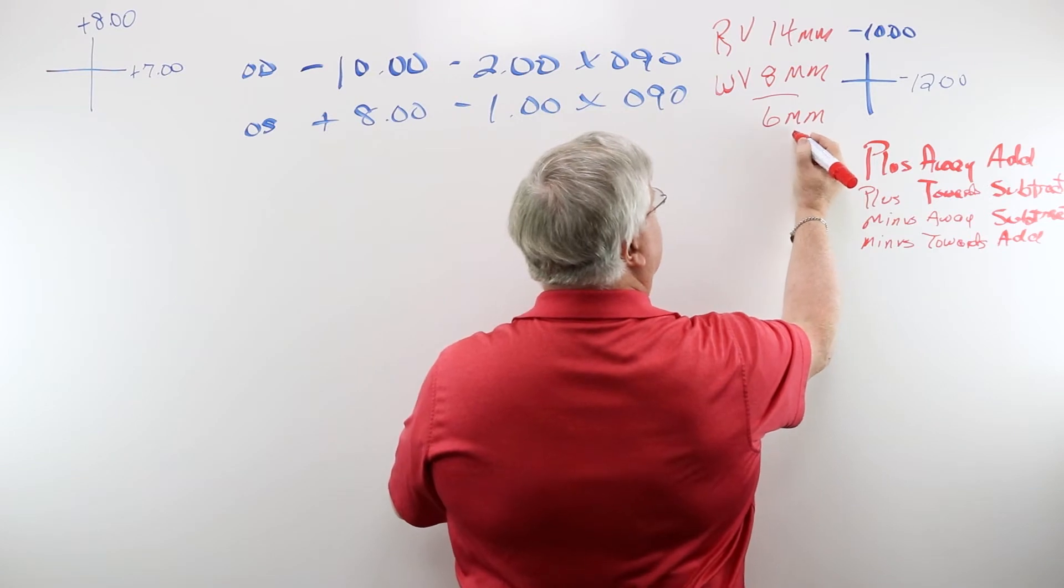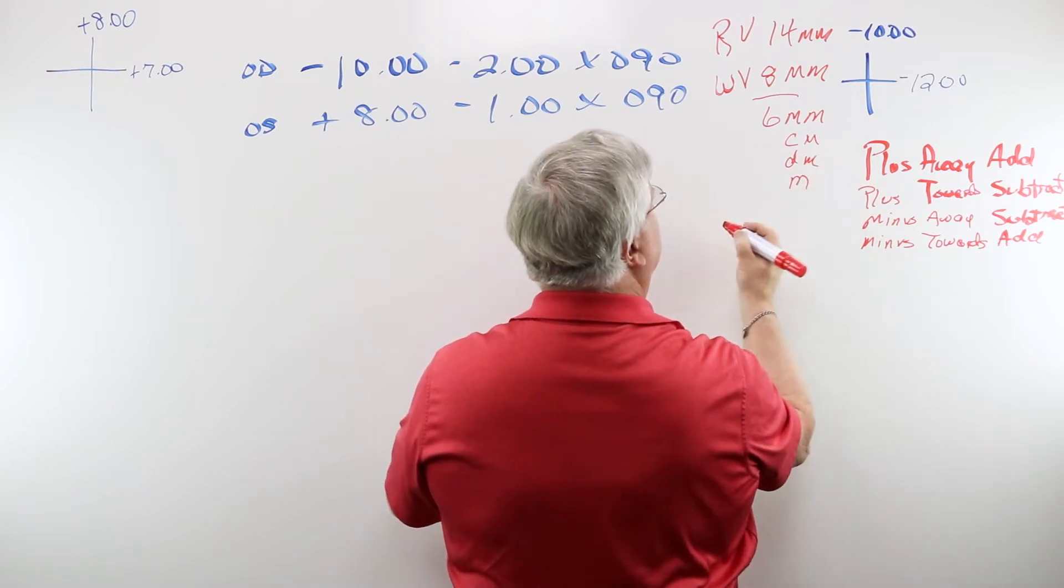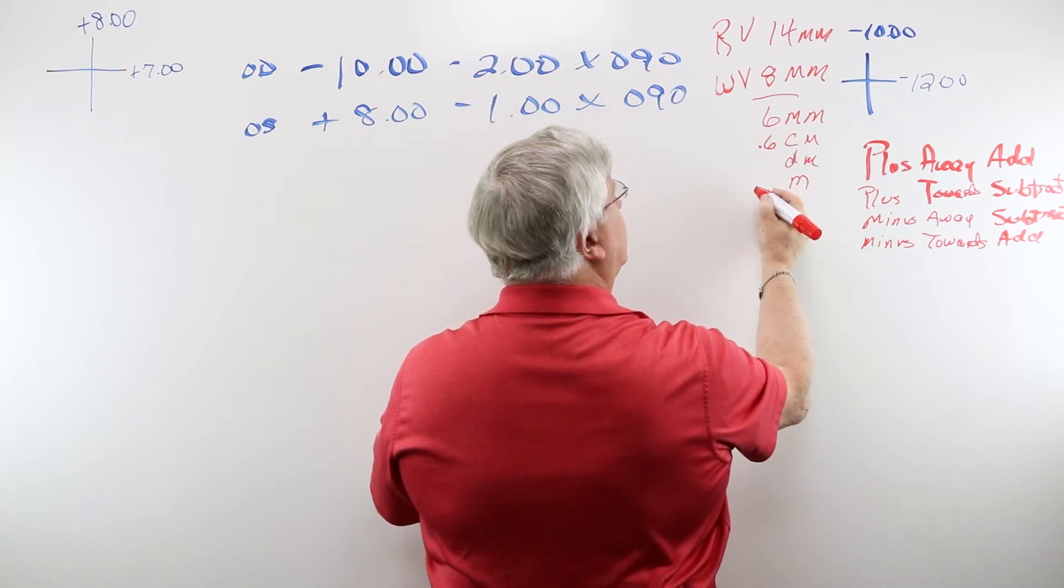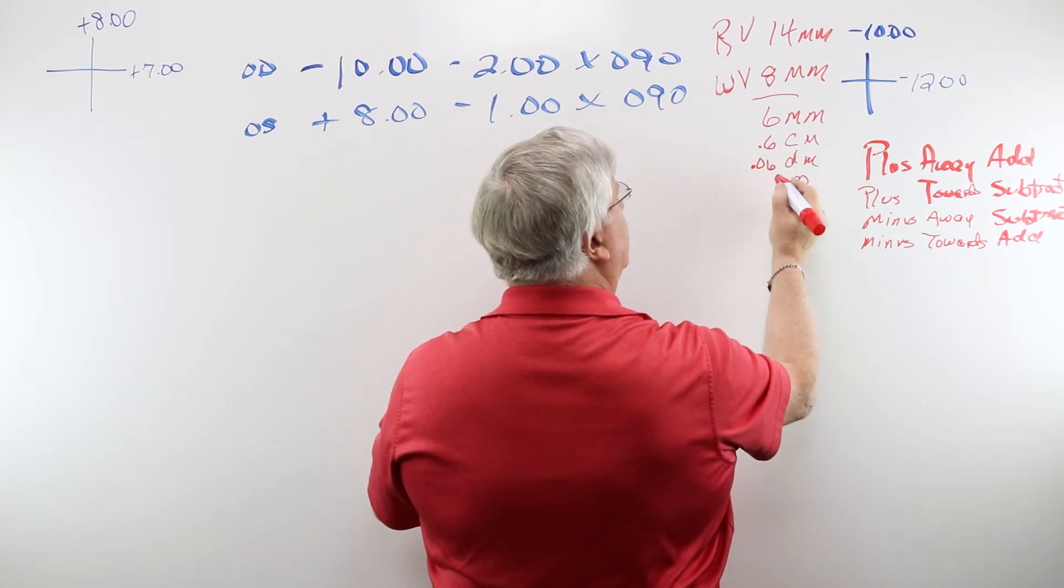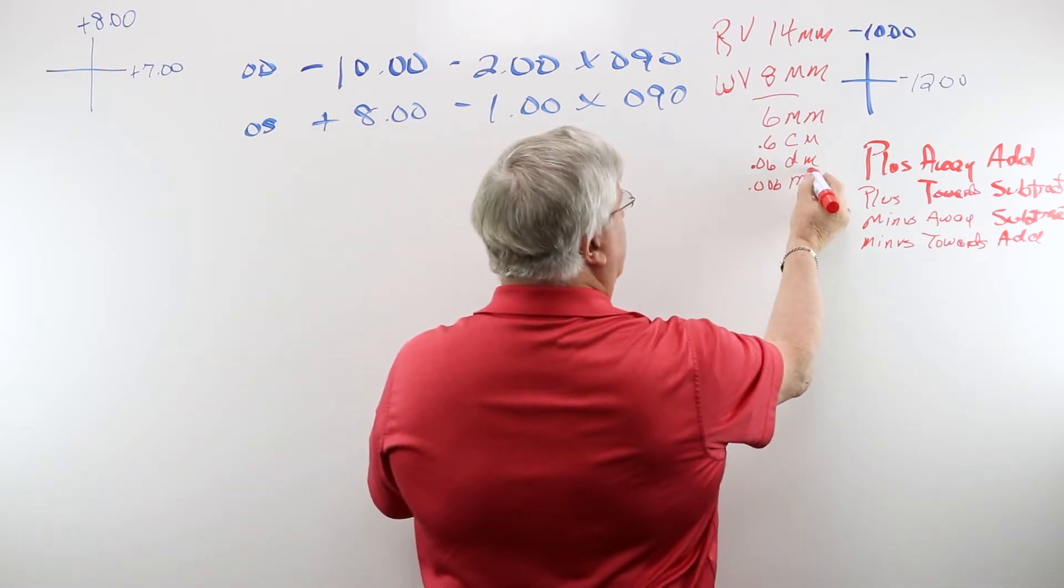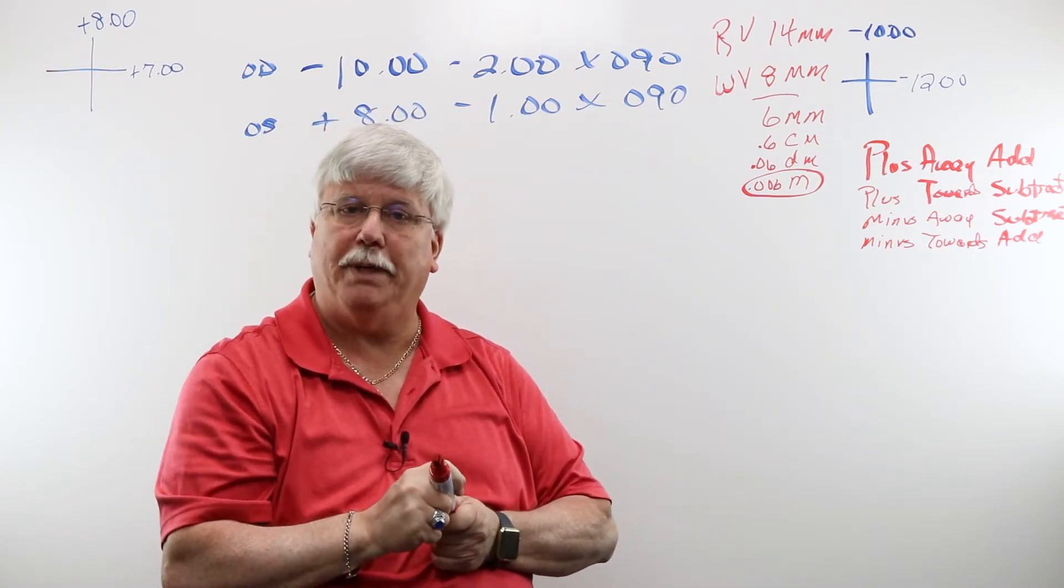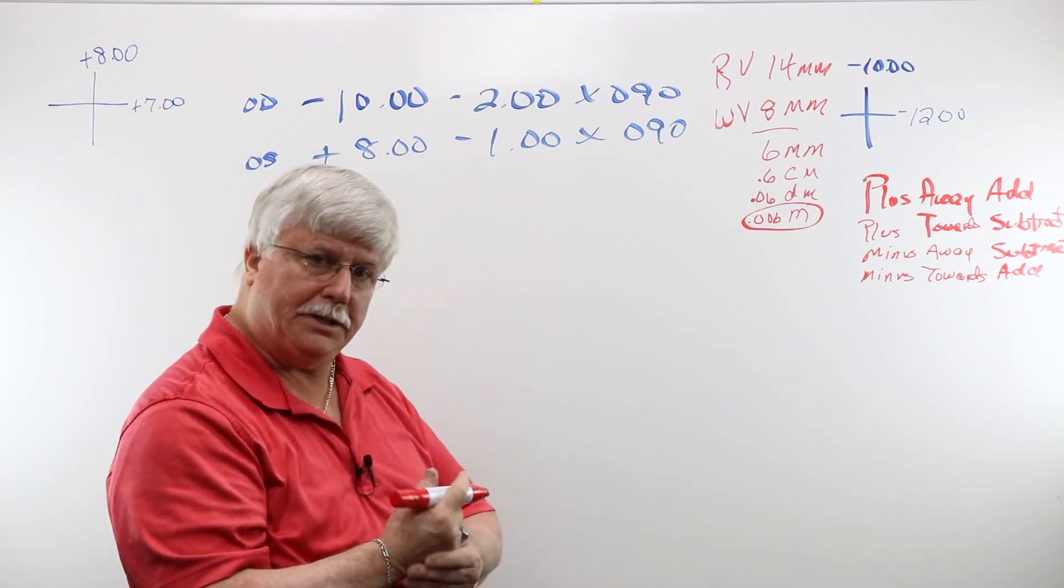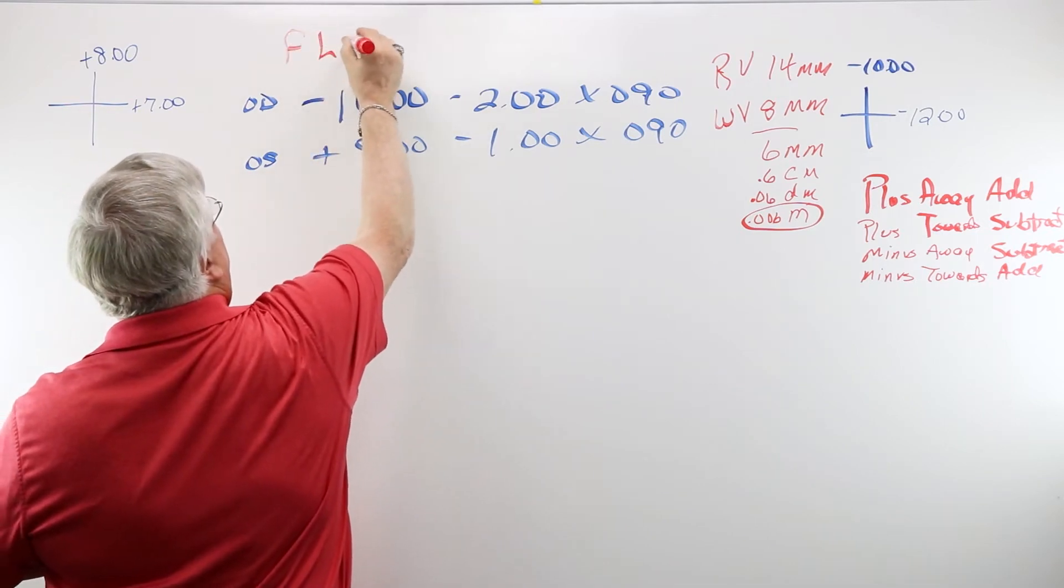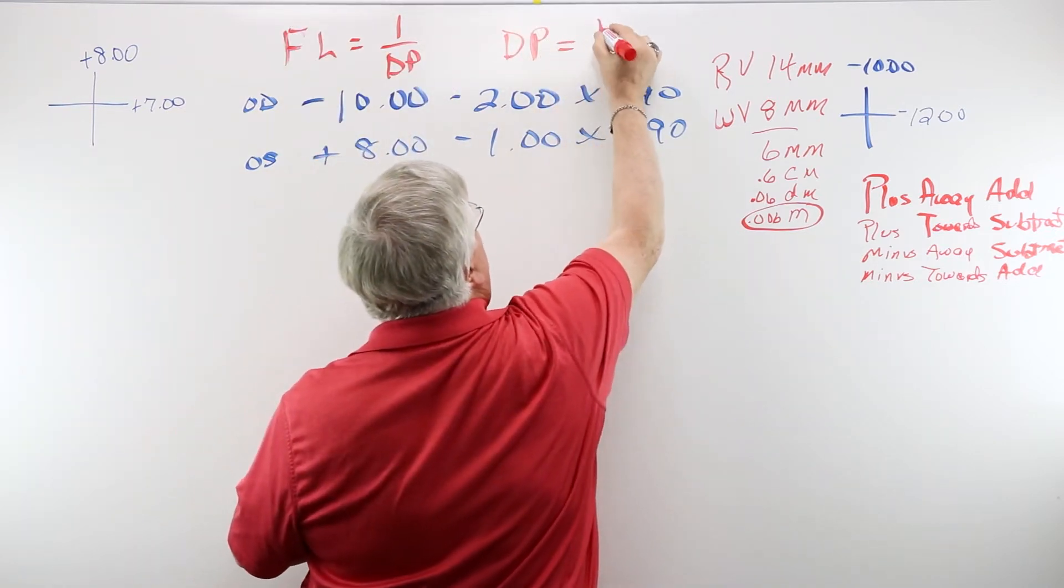For millimeters, the next one you have is centimeters, then you have decimeters, and then you finally have meters. It would be 6 millimeters. Centimeters would be 0.6. Decimeters would be 0.06. And meters would be 0.006. This is what I'm going to be using for figuring out what my total power is going to be at the end. There's another formula that you have to know: focal length is 1 over dioptic power, and dioptic power is 1 over focal length.